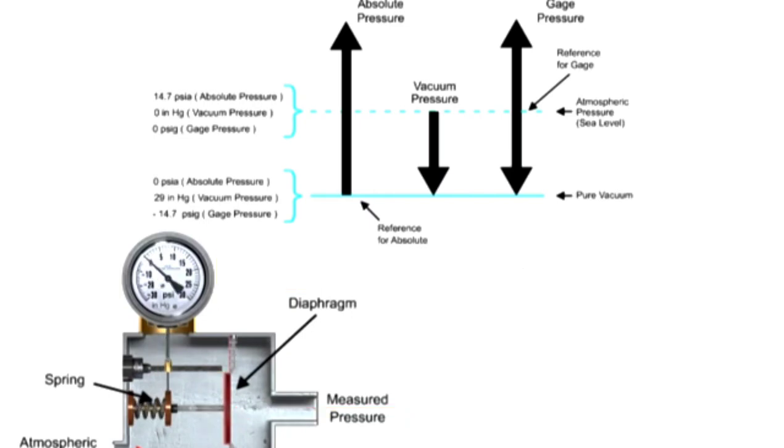Negative gauge pressures are indicated on the gauge with pressures below atmospheric pressure. Maximum negative value for gauge pressure is pure vacuum, or negative 14.7 PSIG.